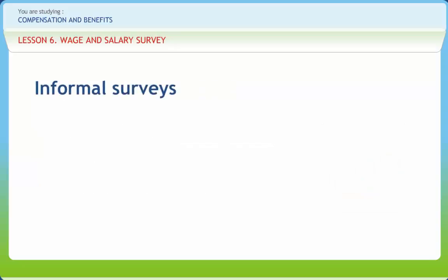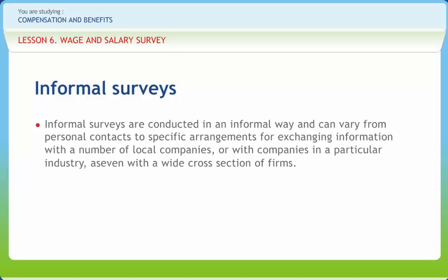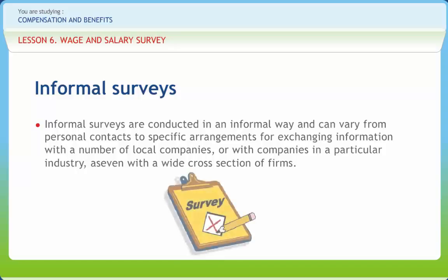There are two main types of compensation surveys: informal and external. Informal surveys are conducted in an informal way and can vary from personal contacts to specific arrangements for exchanging information with a number of local companies, with companies in a particular industry, or even with a wide cross-section of firms. The exchange method of obtaining data has major advantages — it can provide exactly the type of reliable information on existing rates of pay which firms seek, as well as giving them an indication of the likely trends in increases of pay during the year.